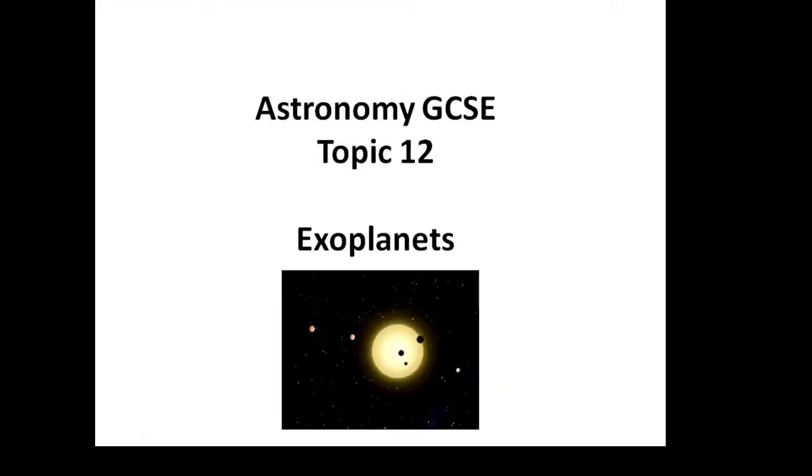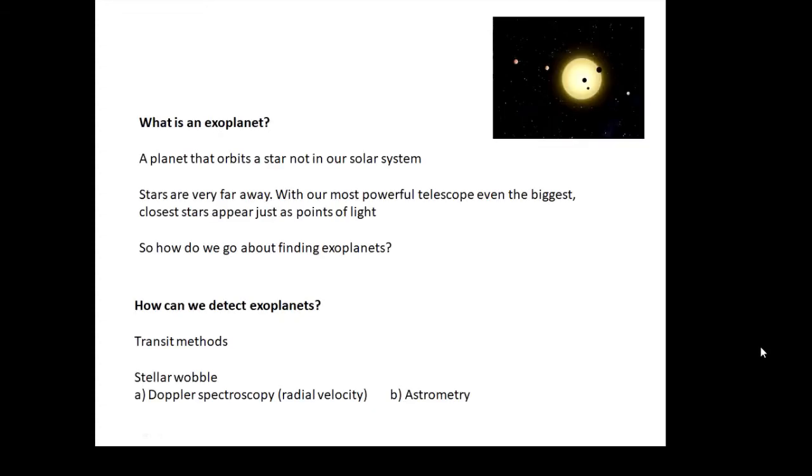Astronomy GCSE Topic 12: Exoplanets. So what is an exoplanet? It's a planet that orbits a star not in our solar system. It's going around another star apart from our Sun. Now how do we detect them?